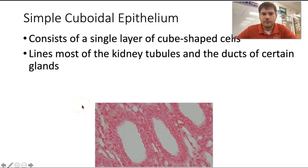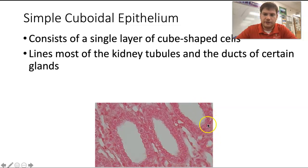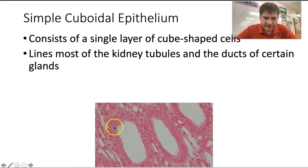Next is simple cuboidal epithelium — simple meaning one layer, cuboidal meaning shaped like cubes. It's a single layer of cube-shaped cells. These two shown are two different ducts, probably somewhere in your kidneys. The other stuff in the corners is connective tissue, which we'll talk about more. What we're really looking at is the lining of these ducts, where urine will be collected. So it lines those ducts.